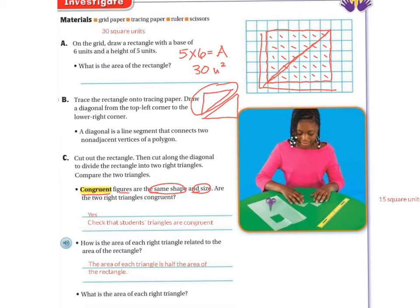but if I cut it in half, that is the area of my triangle. So the equation is area equals base times height divided by two.